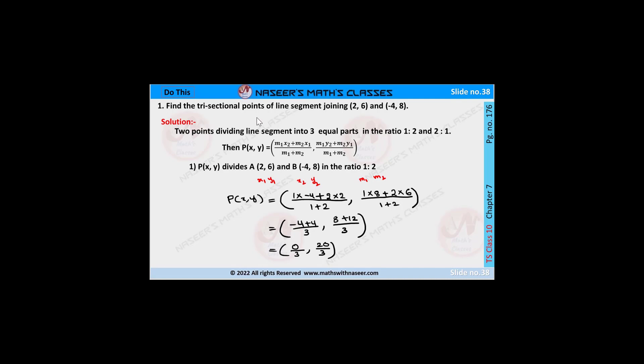Find the trisectional points of the line segment (2, 6) and (-4, 8). The 2 points which divide the line segment into 3 equal parts in the ratio 1:2 and 2:1 are called the trisectional points.